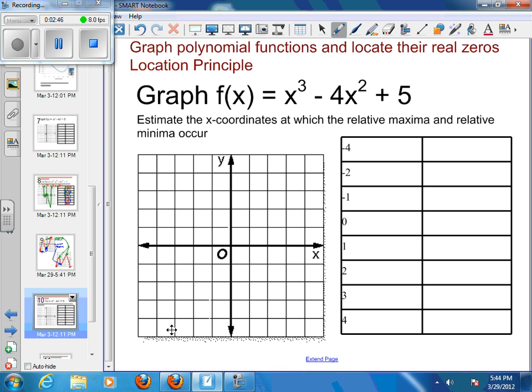I'll start the way I did last time. I've got some number cubed minus four times some number squared plus five. When I plug my numbers in, I'm going to start with a negative four. That's going to be negative four cubed minus four times negative four squared plus five. I get a negative one twenty-three.